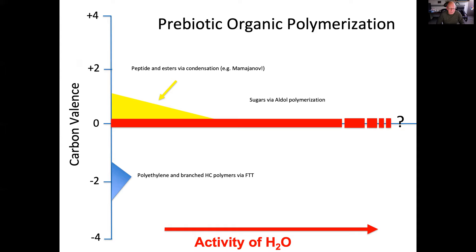In the valence-zero region of carbon's valence spectrum, you have the possibility of polymerizing even at high water activities. Trying to polymerize reduced carbon through Fischer-Tropsch chemistry doesn't work well when water activity gets substantial. But sugar condensation via aldol polymerization can proceed at almost any water activity, though it becomes kinetically sluggish. Irena Mamajanov has done beautiful studies showing that wet-dry cycling can produce fairly large peptide and ester polymers up to quite high water activities.